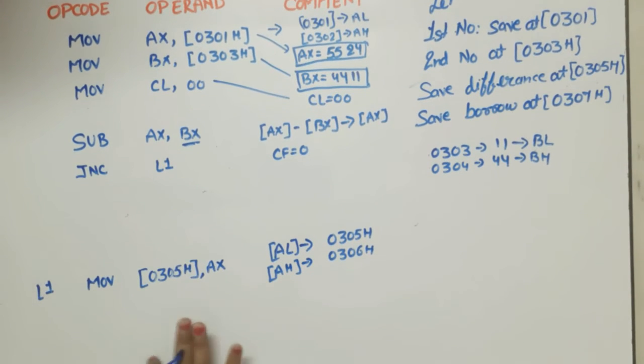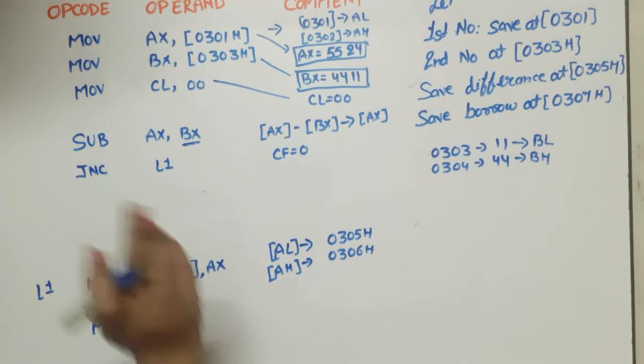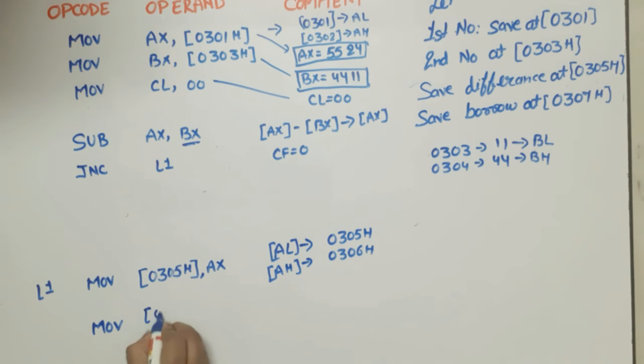Now we will save the borrow. When our borrow did not generate, this value will be saved. So we will write 0307h, CL, means that whatever CL value was, that will go to 0307h, clear.